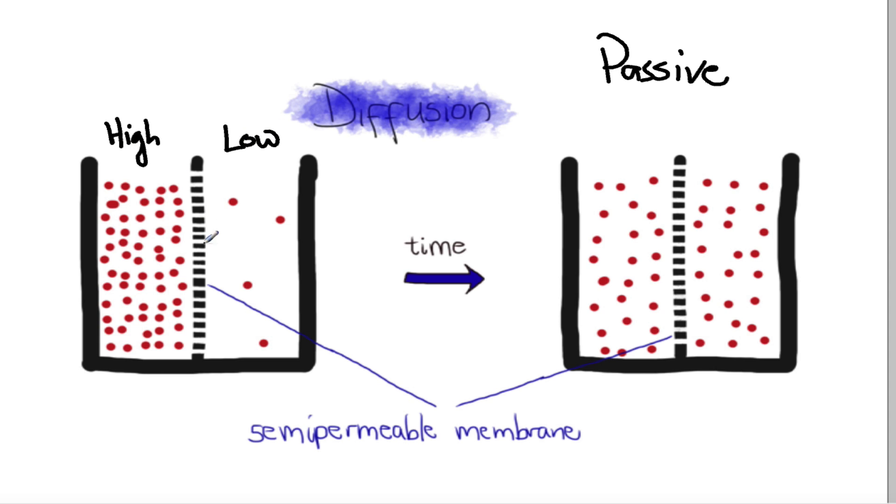Over time you'd expect them to be roughly even, though depending on when you take your snapshot there might be more on one side or the other. Now I've called that a semi-permeable membrane there, but the specification uses the terminology selectively permeable, so we're probably better off sticking to that. These particles can freely get through, but if I had some big proteins for example, clearly that's not going to fit through the holes in the membrane.